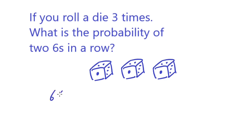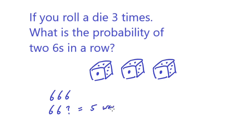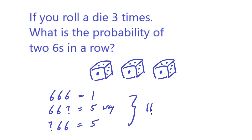You can get six, six, six — that's one way. You can get six, six, and then something that is not a six, which can be anywhere from one to five, so there are five ways. Or you could have something, six, six, where that something can again be one to five, giving five more ways.